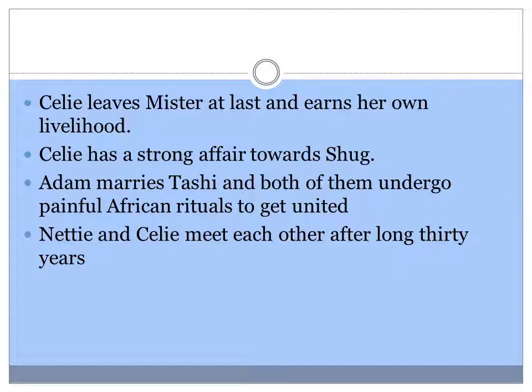Adam marries Tashi, and Tashi had to undergo painful African rituals to get united with Adam. Adam felt so bad on seeing his lover undergoing so much pain for him, so he decides to undergo the same pain also. This is how we are shown how two different generations of men treat their women differently. Celie's stepfather and her husband abused her sexually and physically, but Adam joins with Tashi in bearing the painful African ritual. Nettie and Celie meet each other after long 30 years, and it is in their reunion that the novel ends.